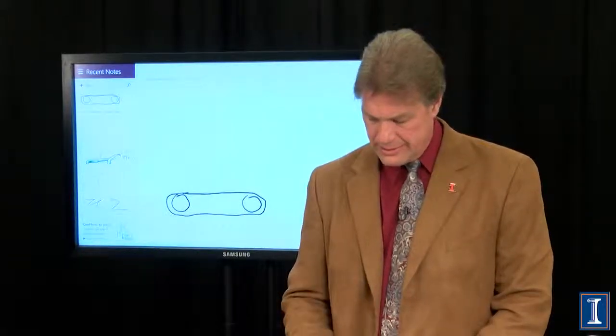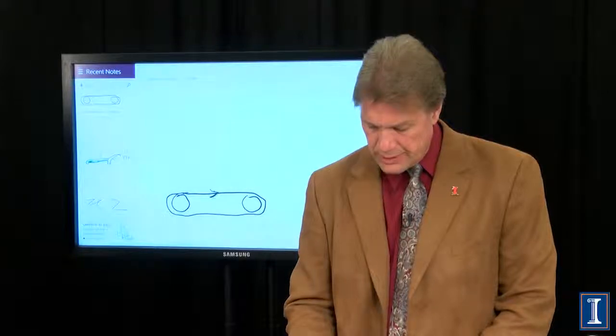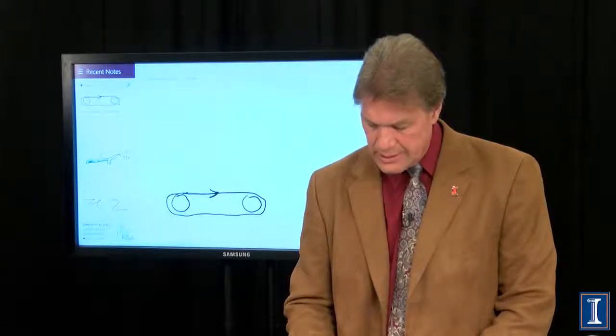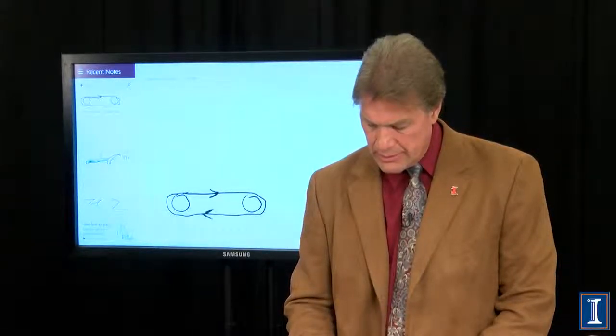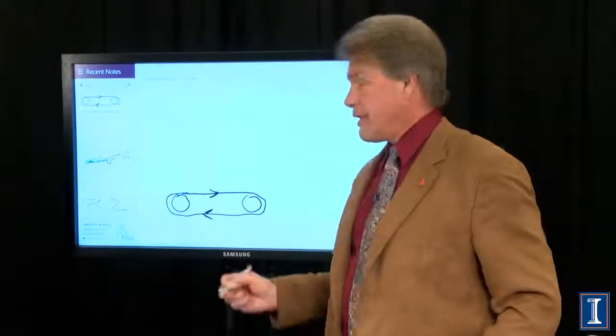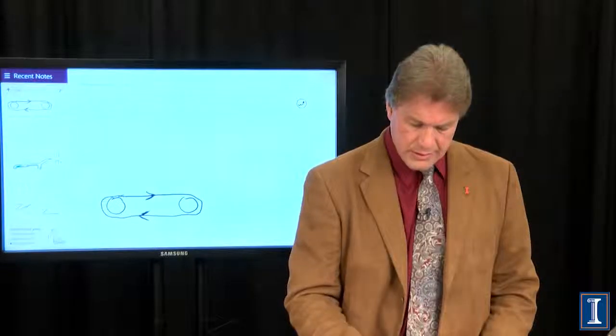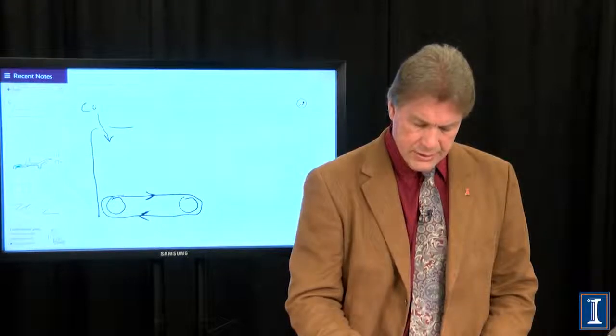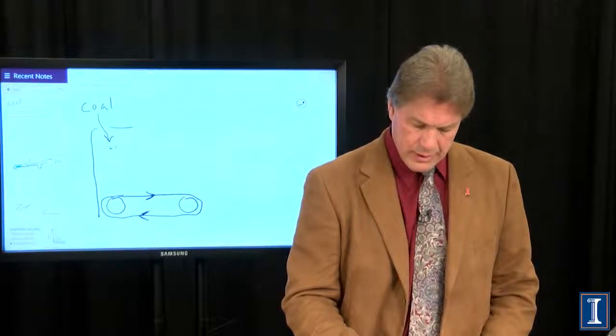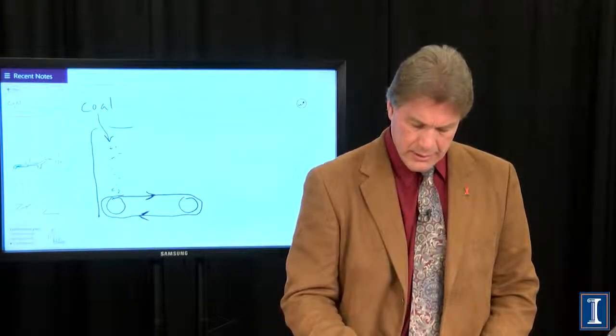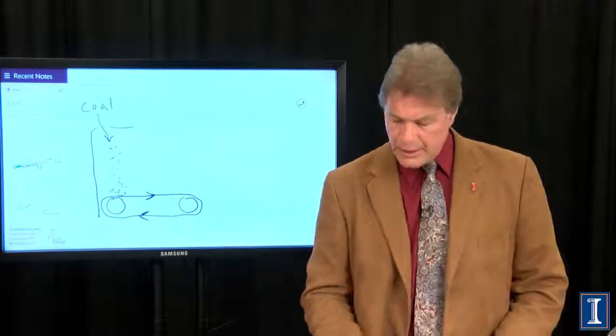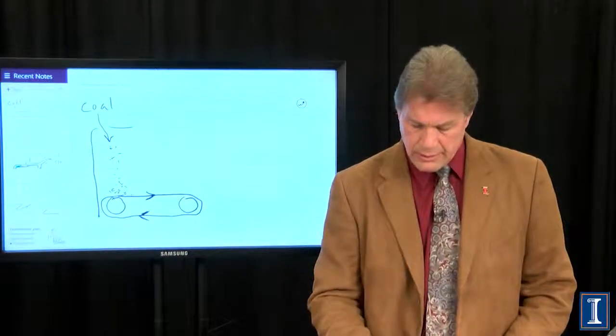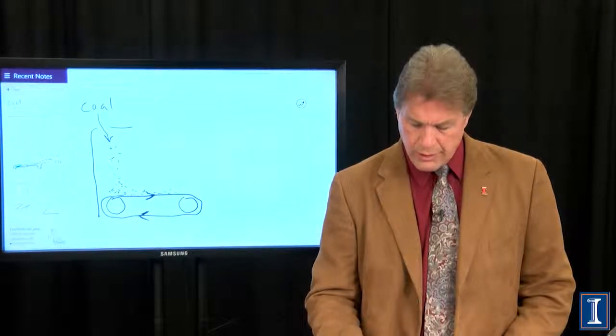What do I mean by a moving grate? Imagine the treads of a tank. This is a mesh, sort of like a chain link fence, that's moving around, going here in this diagram to the right. Somewhere up here, we have a coal hopper. We've got chunks of coal falling into this system. And because the grate is moving, the coal moves along with it.